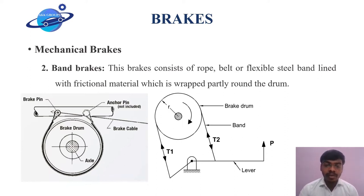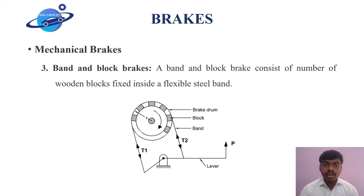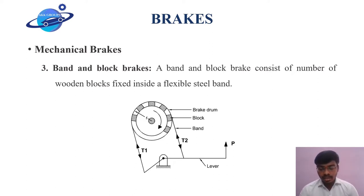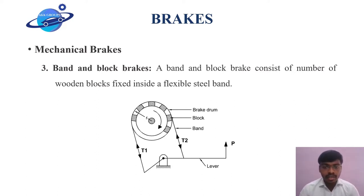We look at the third type in mechanical brakes, that is band or block brakes. It is the same as band brakes but with a small change: a wooden block is placed between the rope and the drum, which results in an increase in braking capacity.